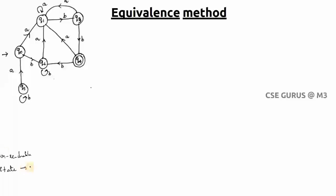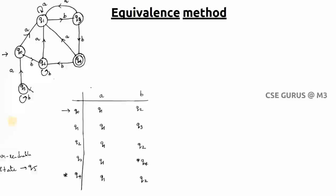In the equivalence method, Step 1 is to identify non-reachable states. We found that q5 is the only non-reachable state, so it is removed. Now we construct the transition table for the remaining states q0, q1, q2, q3, q4. q4 is the only final state, marked with a star in the transition table.